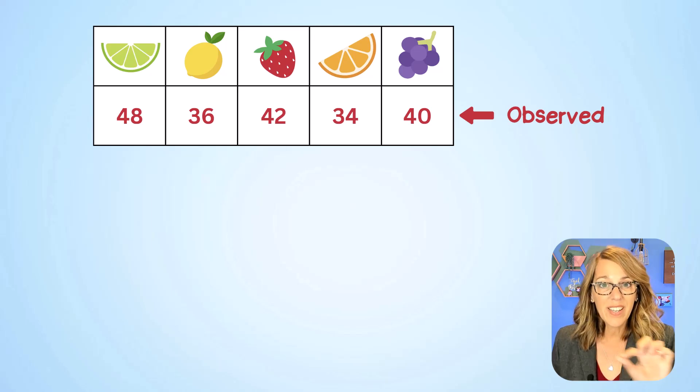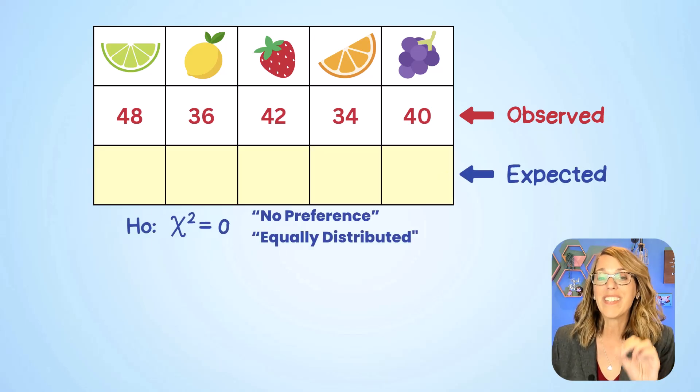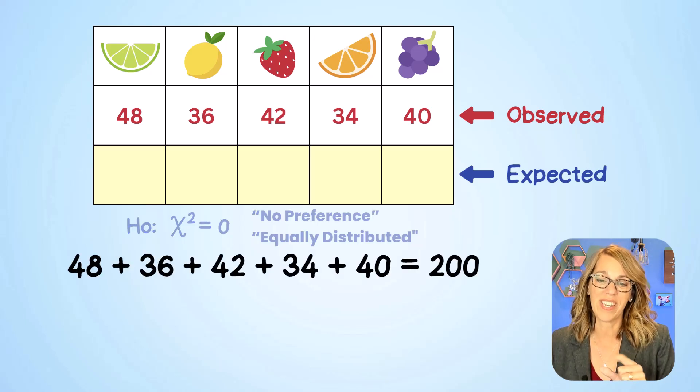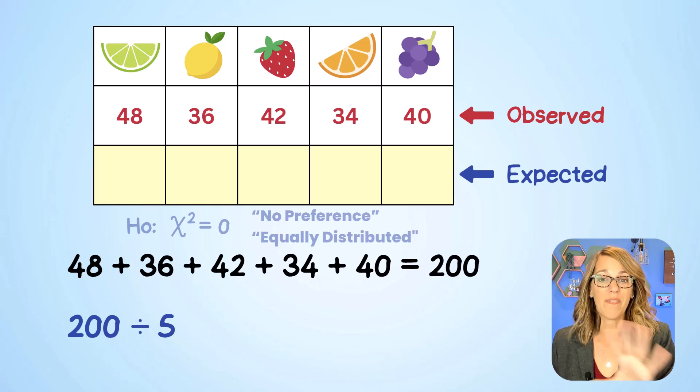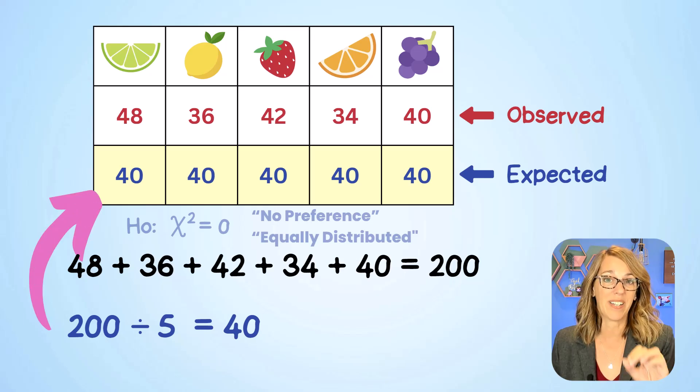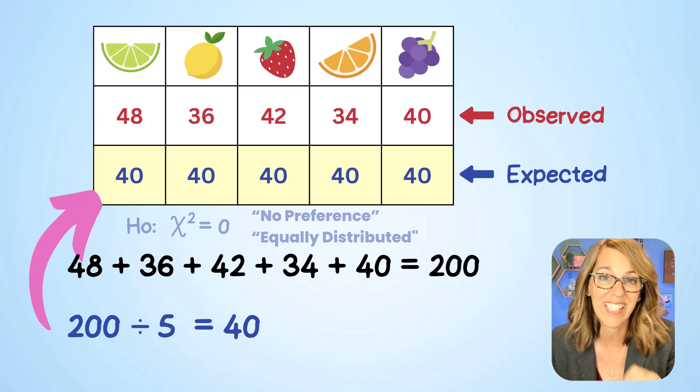Okay so back to our table. Let's go ahead and give ourselves a row for the expected values. We're going to find these based on the null hypothesis that says there's no preference, that these are equally distributed. So we need to add these numbers up and as we total these numbers up we get 200. We're going to divide them evenly into our five categories or five flavors and we end up with 40 per flavor. These are our expected values. Now if you take a look they're definitely different than the expected values except for the grape. But are they significantly different?